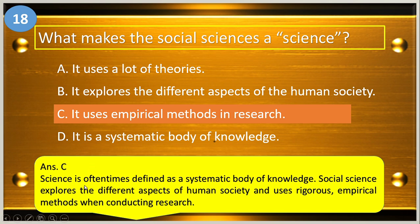Science is oftentimes defined as a systematic body of knowledge. Social science explores the different aspects of human society and uses rigorous empirical methods when conducting research.